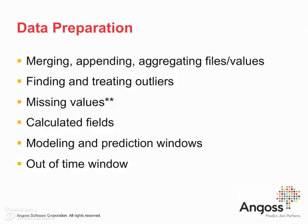We also have to decide on three time windows that specify the data. The first is the modeling window — the period over which we build the model, for example January 1st to end of 2012. The second is the prediction window — how far ahead we predict default, such as whether 90-day default will occur within one, two, three, or five months. The third is the out-of-time window — a separate period used to test whether changes in the population have affected the scorecard. These three windows — modeling, prediction, and out-of-time — must all be defined.